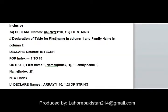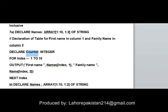Let me show you the pseudocode. You have to declare an array named 'names'. The array will have 10 rows starting from 1 to 10, and it will have two columns starting from 1 to 2. It will be of type string because it will save names. Then you have to declare a variable named 'counter', which will be of type integer, meaning it will store whole numbers.